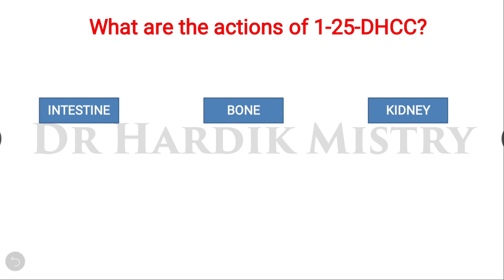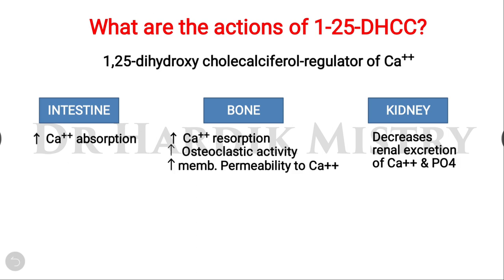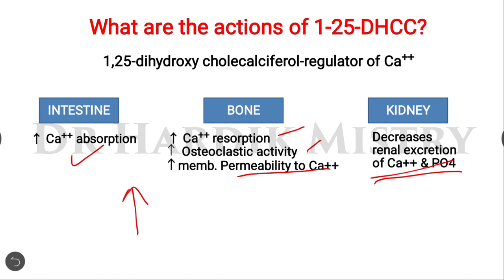Starting with the vitamin D3 derivative, 1,25-DHCC: in the intestine, it increases calcium absorption from food. In bone, it increases calcium resorption and osteoclastic activity — that is, bone demineralization — and increases membrane permeability to calcium ions. In the kidney, it decreases renal excretion of calcium and phosphate ions. The overall conclusion is that 1,25-DHCC increases serum calcium levels.